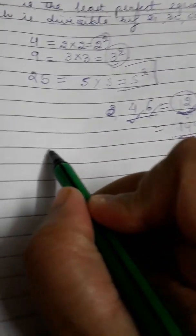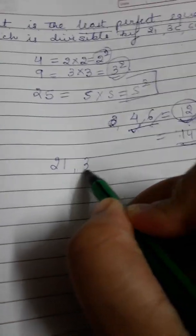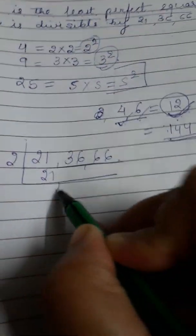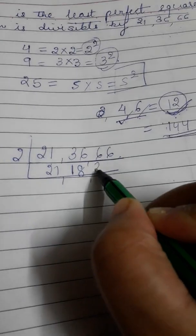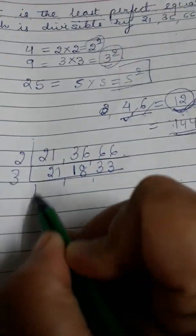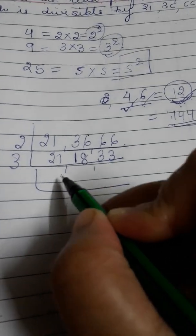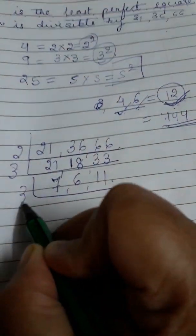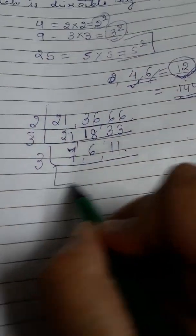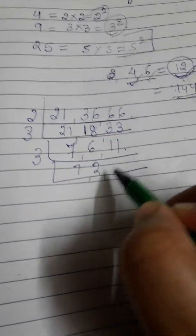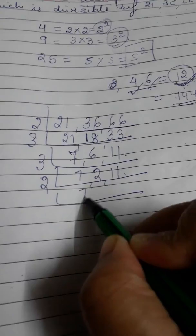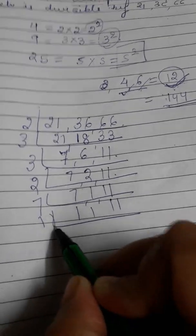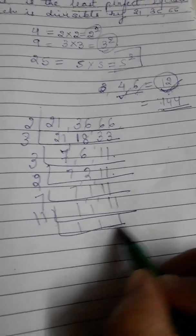So 21, 36, and 66, let's find the LCM. 18 and 37, 33, then 3, this is 21, 7, then 6, 3's are 18, and 11. This I can further write as 7, 1, 11. Done. My work done.